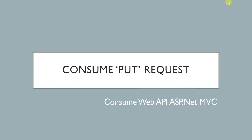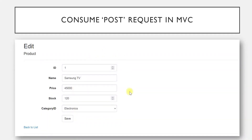Hello friends, welcome back. We are studying how to consume a web API in an ASP.NET MVC application. In this video, we are going to see how to consume a PUT request in our MVC application. Whenever we click on the edit link, the product data will get pre-populated, and when we hit save, the changes get posted to our web API, which will modify and store it in the database.